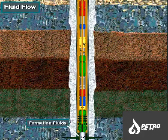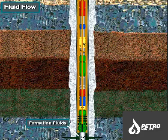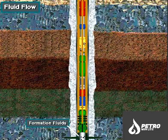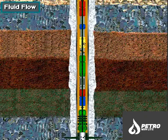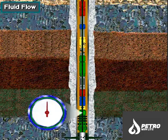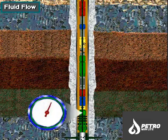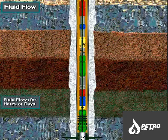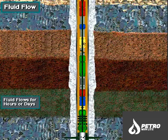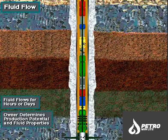With the ports open in the DST tool, formation fluids flow, pushing any drilling fluid in the hole below the packer into the tool, then flowing up the tool and drill string to the surface. The test crew first lets the well flow for a short time to clear out the drill stem, then shuts in the well for a time to allow pressure to build. The well owner then allows fluid to flow for a few hours or several days, depending on the well. Produced fluids are caught in a holding tank or burned off at the surface. During the flow period, the owner determines the well's production potential and fluid properties.